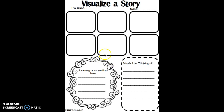When you're done visualizing the story, I want you to think of a memory or connection that you have. So thinking about what I just read to you, does that remind you of something that you've done before? Maybe you've been to a market or a store or a mall, and maybe you've had some coins or some money in your pocket. Or maybe you've seen some things before that were being sold at the market. In this small area, I want you to just write one teeny tiny little sentence telling me about a memory that you have that connects to the story.